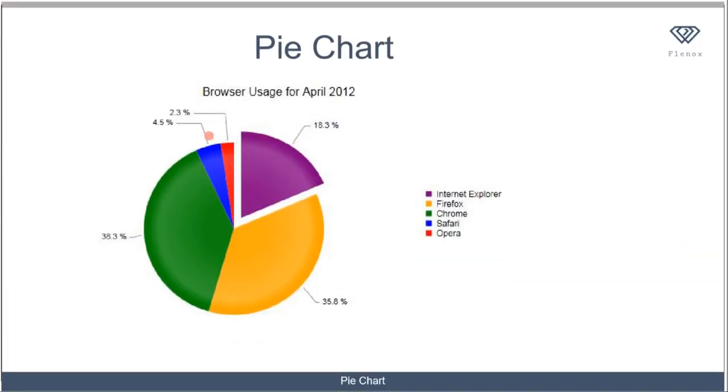Let's take a look at this pie chart. This pie chart shows the browser usage for April 2012. We can see different types of internet browsers: Internet Explorer, Firefox, Chrome, Safari, and Opera. If you want to see the total number of people that make use of Firefox, it's represented by this yellow region.